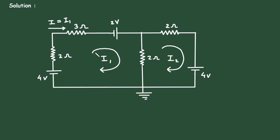Now let us apply KVL to mesh number 1. Before applying KVL, according to the direction of current I1, this terminal will be positive, this will be negative, here this will be positive, this will be negative, this will be positive, and this will be negative.